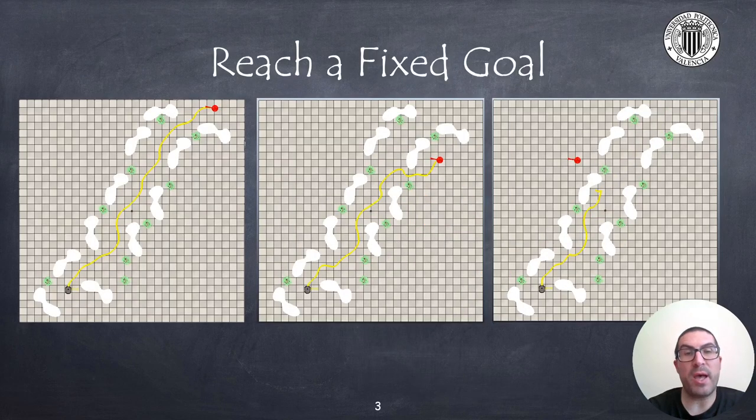In the video description I have included a link with a file in order to implement this activity. It consists of an environment in which the robot must try to reach a fixed goal, in this case a red flag. Depending where the red flag is placed you can find situations in which the robot will reach its goal, but there might be other cases in which the robot is trapped in a local minima, as you can see in the third example.